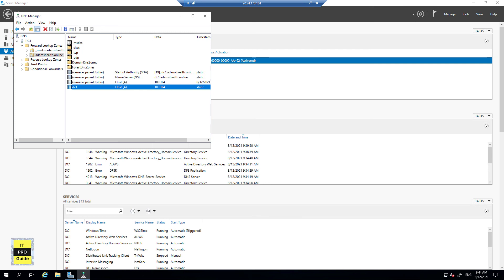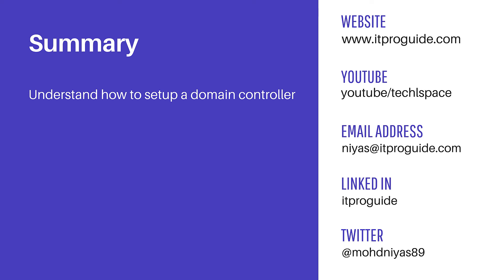Let's summarize what we learned in this video: how to set up a domain controller in Windows Server. Once you complete the installation, you have management tools to manage the Active Directory domain controller. We won't go deep into each tool here — we will learn about them through future projects. However, DNS deserves some foundational knowledge, so in the coming video I will talk about DNS and how it relates to Active Directory. That's all — see you in the next video.